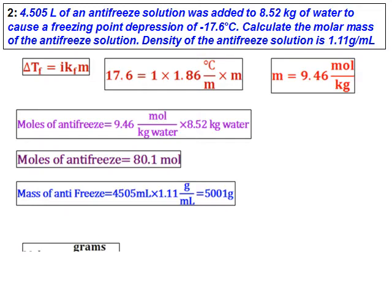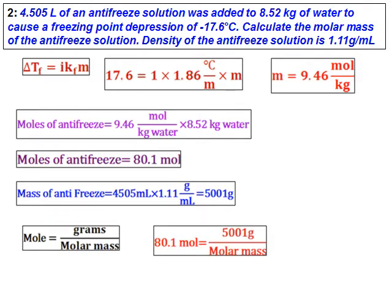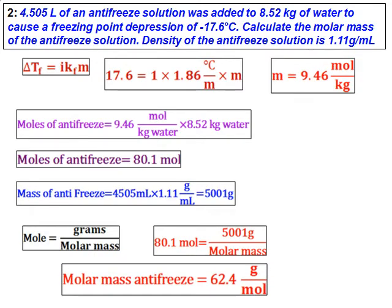We know the formula: moles equals grams over molar mass. I have the mass of the antifreeze and I have the moles of the antifreeze. Substituting into the formula, I get the molar mass as 62.4 grams per mole.